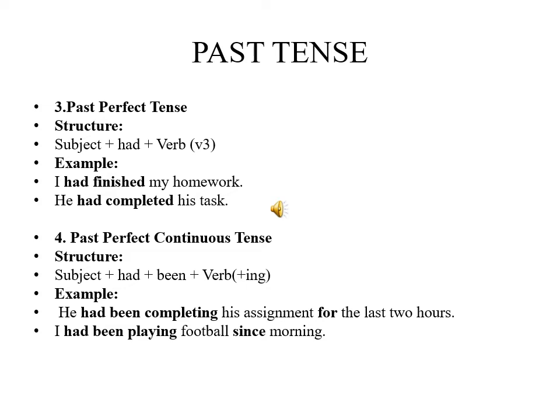Third type of past tense is past perfect tense. Its structure is subject plus had plus verb third form. Example, I had finished my homework. He had completed his task.